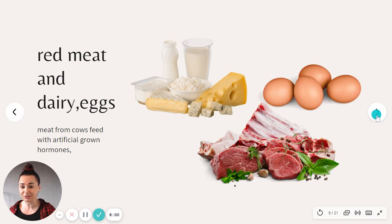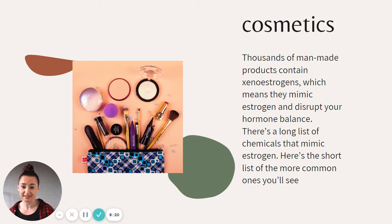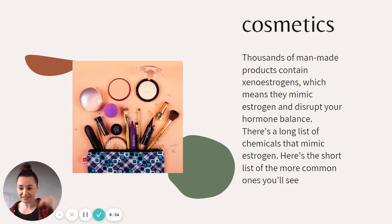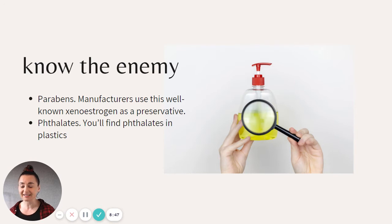Another contributor is cosmetics. Thousands of man-made products contain xenoestrogens, which mimic estrogen and disrupt your hormonal balance. There is a long list of chemicals that mimic estrogen. I've made a short list of the most common ones, which I'll link under this video so you know which ingredients to check and which to avoid. Know your enemy — parabens are the big one. Parabens are in the majority of things we use: body lotions, shampoos, conditioners, makeup removers. Manufacturers use this well-known xenoestrogen as a preservative.